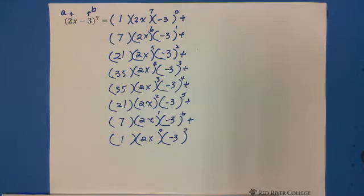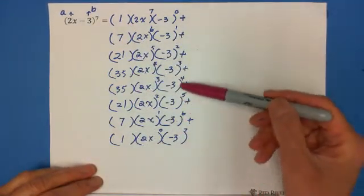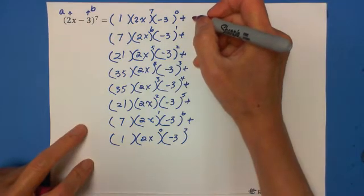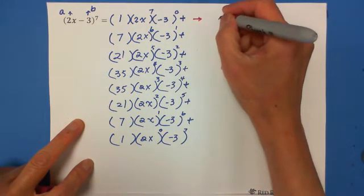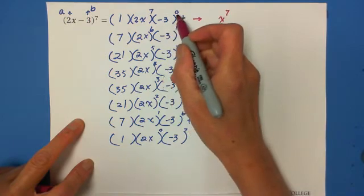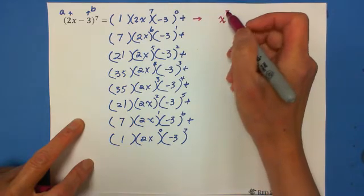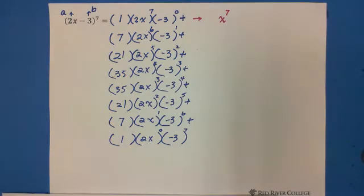So as a result, even at this setup step you can already see the structure. Now the next step is just calculation. The first term: coefficient 1, times (2x)^7 gives 2^7 times x^7. The coefficient 2^7 equals 128. So the first term is 128x^7.